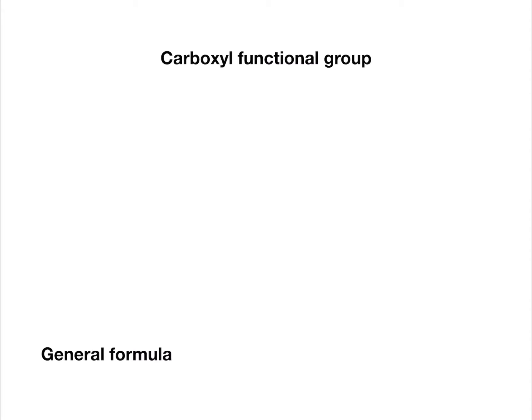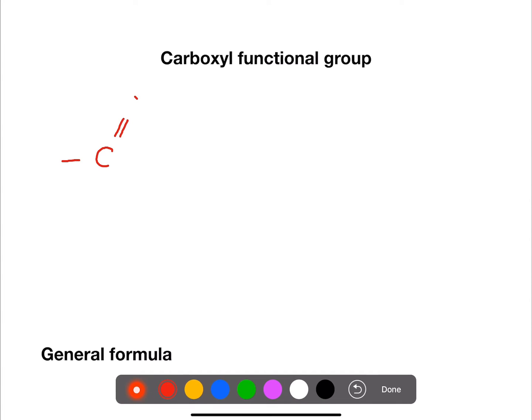The carboxyl functional group has this structure. We have a carbon double bonded to an oxygen and also bonded to a hydroxyl functional group. You may also see it written in shortened structural formula. Due to the structure, it is always on an end carbon.